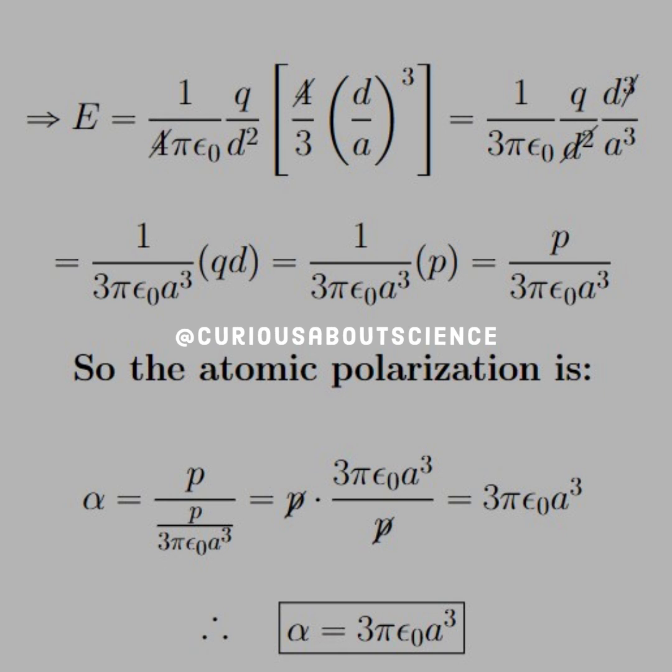Now we can substitute this into the equation for the atomic polarization. We note that when we're dividing by a fraction, we multiply by its reciprocal, and we see that the dipole moments cancel, leaving the expression for the atomic polarization alpha. Alpha is equal to 3 pi epsilon naught a cubed.